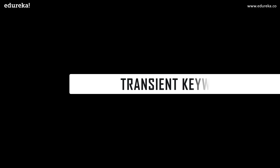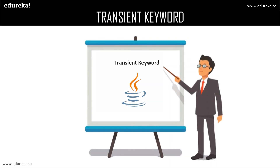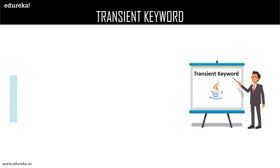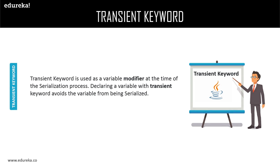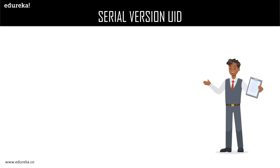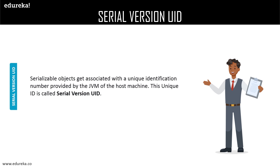The transient keyword is a reserved keyword in Java used as a variable modifier at the time of the serialization process. Declaring a variable with the transient keyword prevents the variable from being serialized. Next: serial version UID. Before serialization begins, every serializable class or object gets associated with a unique identification number provided by the JVM of the host machine — this is called the serial version UID. This UID is used by the receiving JVM to confirm that the same object is being deserialized at the receiving end.